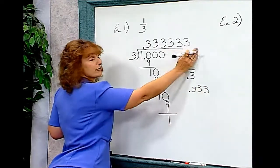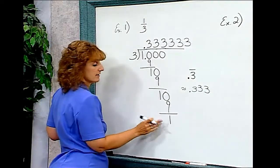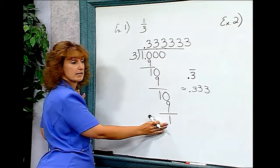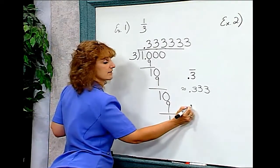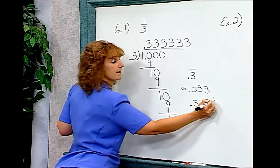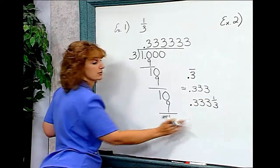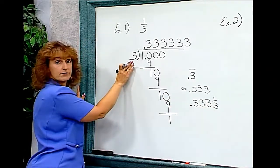We would drop the rest of the threes. Another way to do this is to take this one and bring it up as a remainder. We could write this answer as .333 and one-third, the one coming from the remainder, the three coming from the divisor.